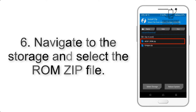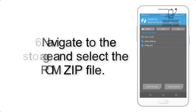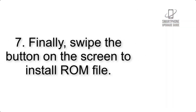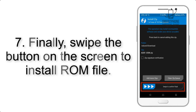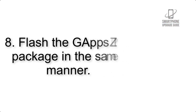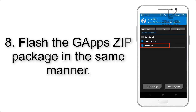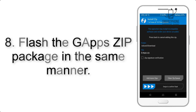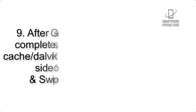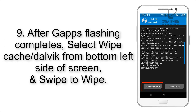Step 5: Go back to the recovery main screen and tap on the Install button. Step 6: Navigate to the storage and select the ROM zip file. Step 7: Finally, swipe the button on the screen to install the ROM file.